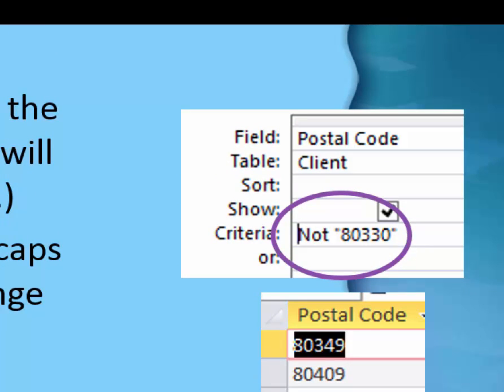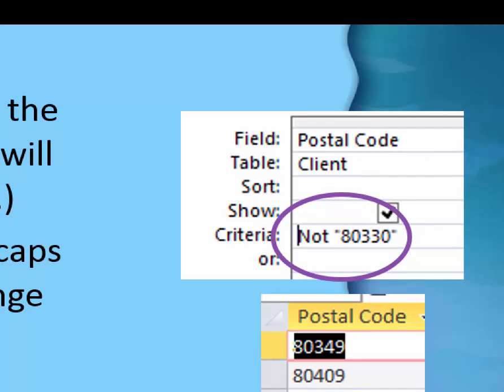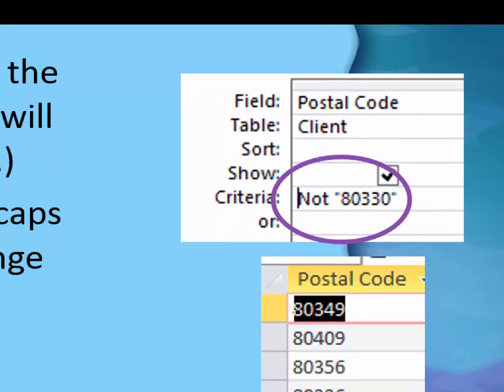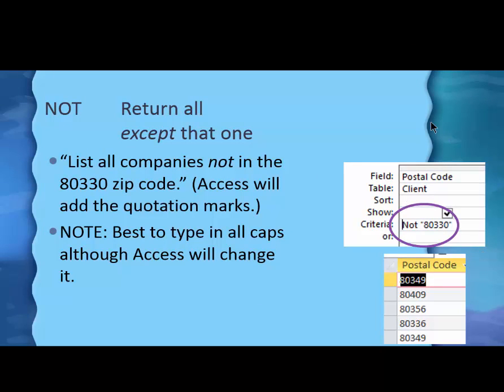Not 80330. The computer changed the NOT to caps and smalls, and it added the quotation marks around the number. Did you see that? And so, now, when I look in my postal code list, I see every zip code except 80330.